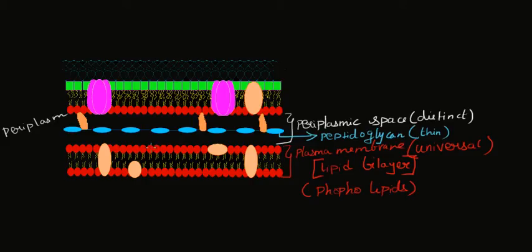This periplasmic matrix has a lot of proteins with various functions, ranging from transportation of materials across the membrane to modifying toxic components so that the gram-negative bacterial cell can be saved. The periplasm also contains an important enzyme capable of synthesizing the peptidoglycan layer.